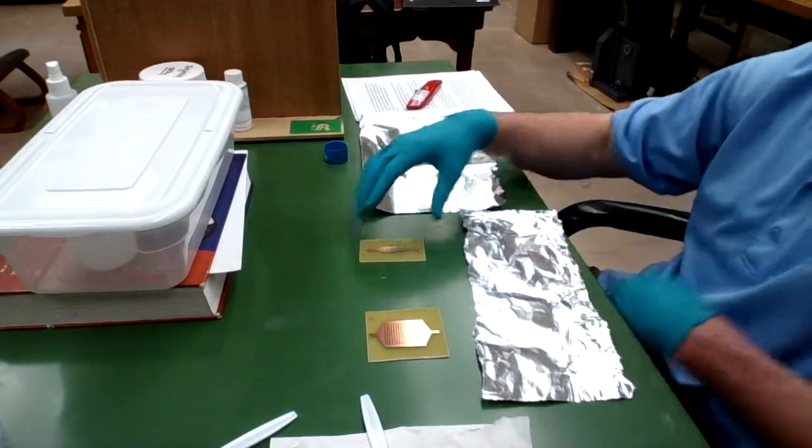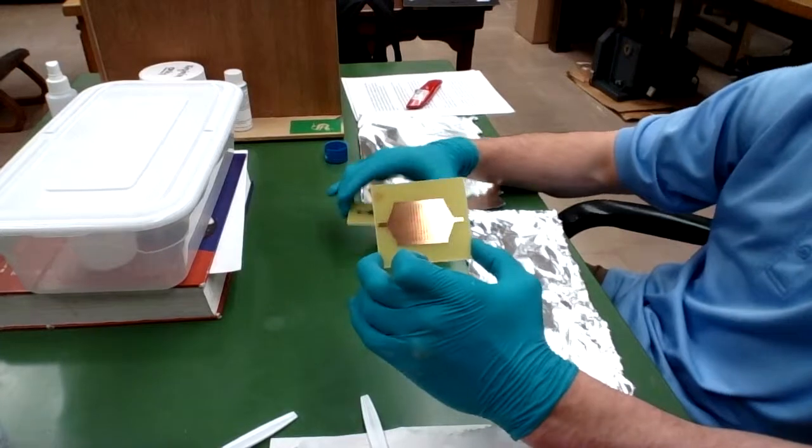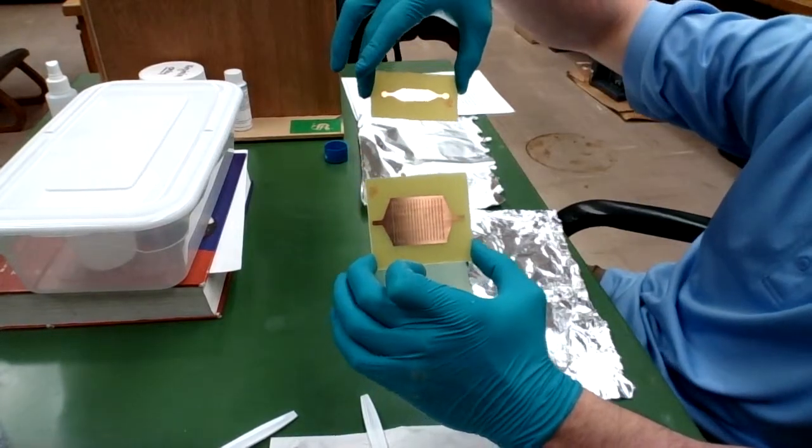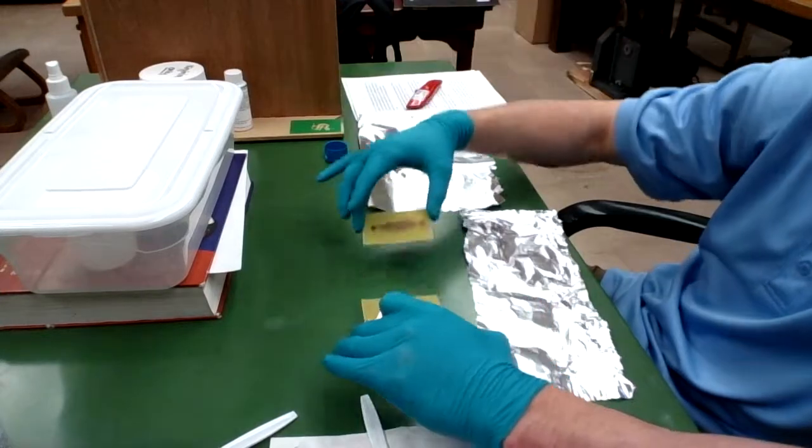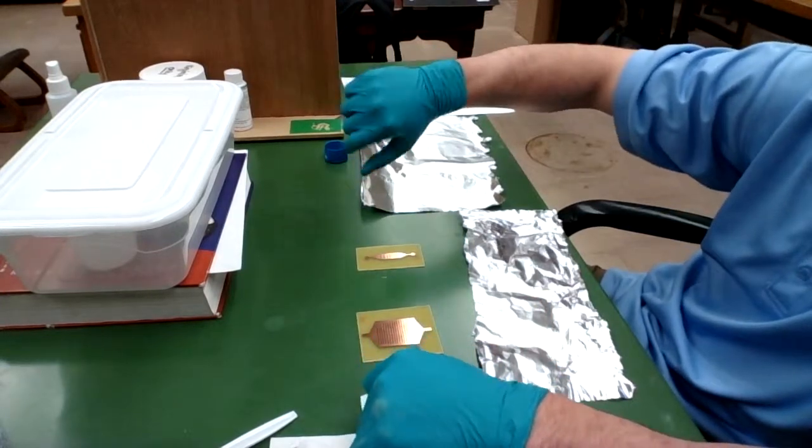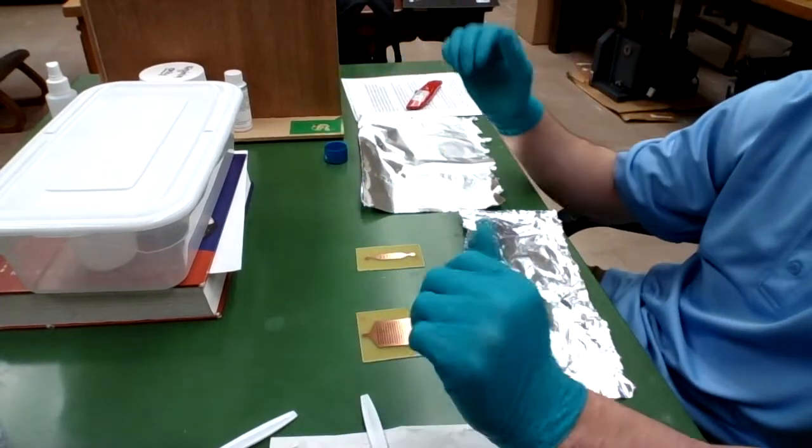Alright, so while my PDMS is degassing, I'm going to take my two PCB designs and create vessels for them out of aluminum foil so that I can pour my PDMS into them and allow them to cure in the oven.